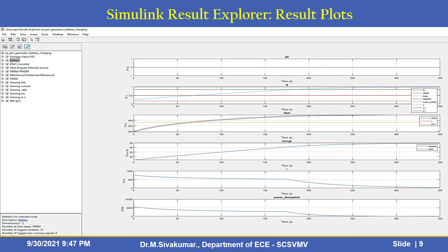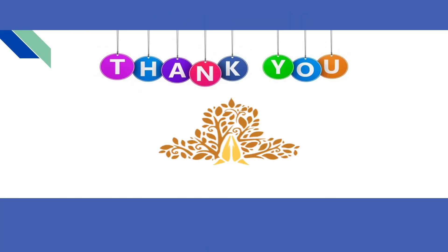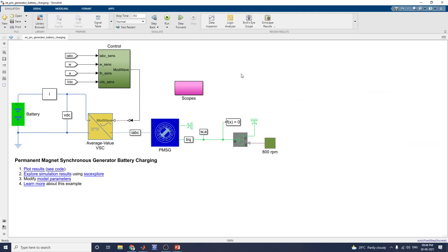This snapshot shows the Simulink Result Explorer. Using these result plots you can see average values for the VSE (voltage source converter), battery reference converter voltage, ideal angular velocity source, IPM diagram, mechanical rotational reference, VMSG sensing, VDC sensing, current sensing, IABC sensing, torque sensing, and power sensing — all viewable using the result explorer.